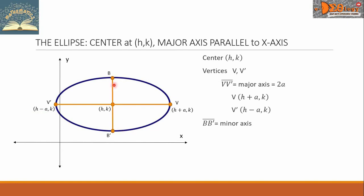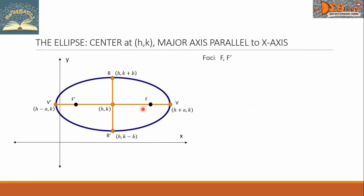Let us draw now the minor axis. The endpoints are B and B' respectively. We assign the value B for the length of the minor axis. The coordinates of points B and B' are H, K plus B and H, K minus B respectively. The foci are denoted by F and F'. The line segment connecting the foci is assigned to be 2C. The coordinates of the foci are H plus C, K and H minus C, K respectively.